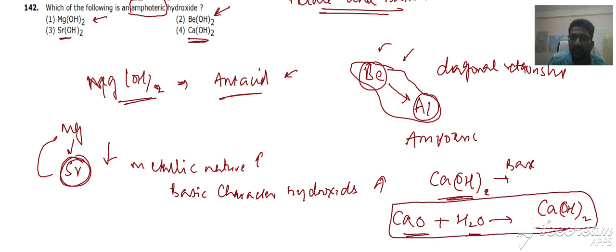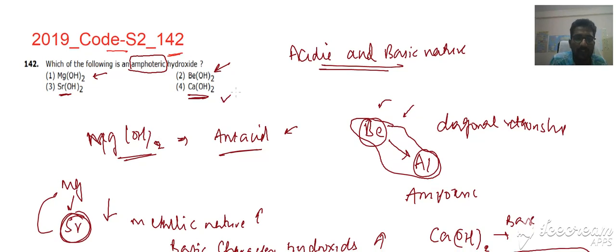Ca(OH)₂ is basic. So out of these four, the amphoteric oxide is option D because it has a diagonal relationship with an amphoteric element which is aluminum. Aluminum and beryllium both form amphoteric hydroxides. Thank you very much.